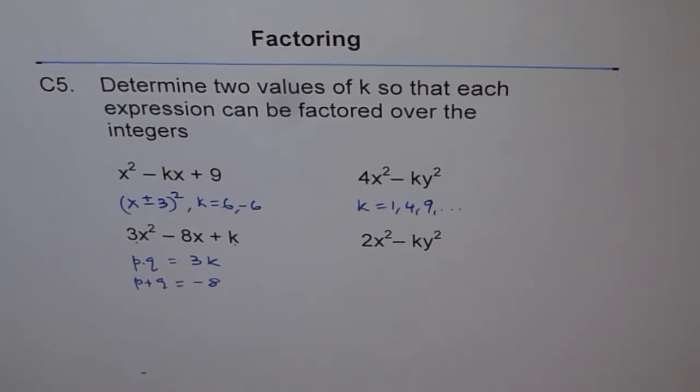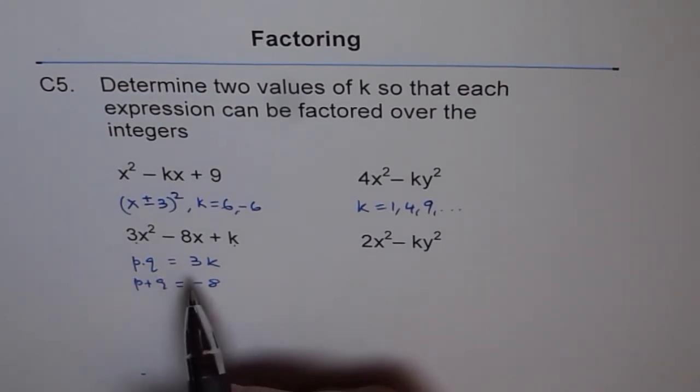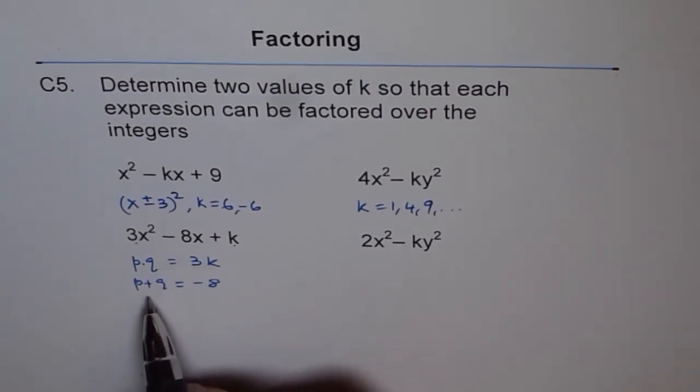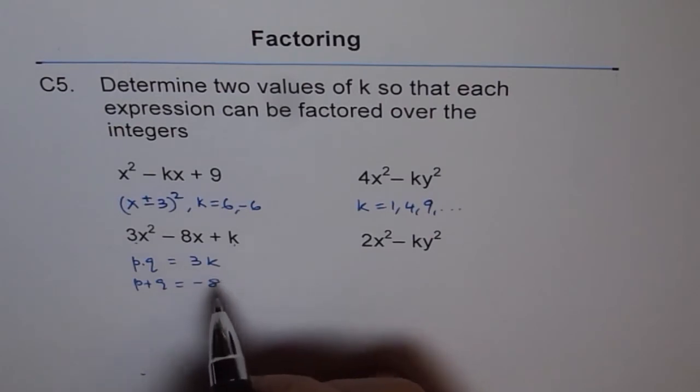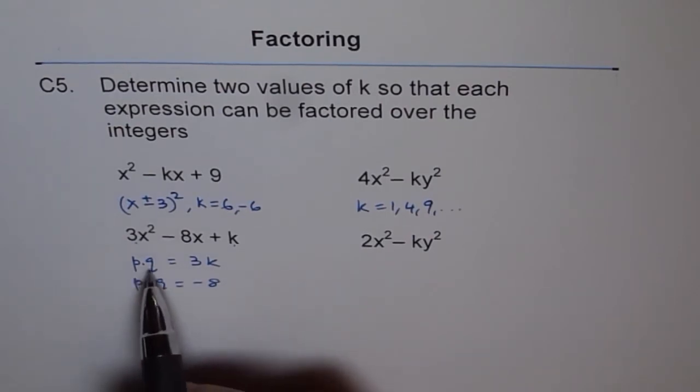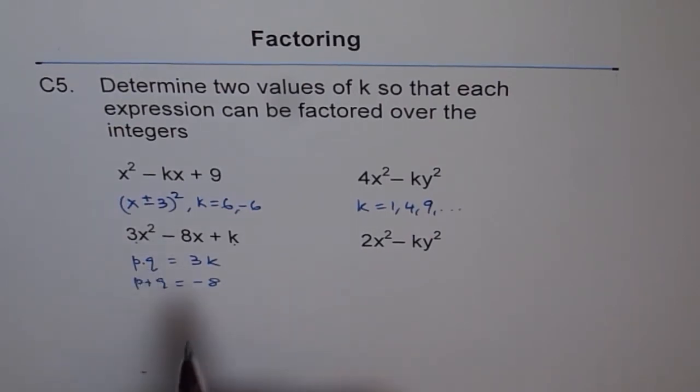So what could those numbers be? That is the issue. So if you want sum as minus 8 and product as 3 times something, that means it has to be a multiple of 3. So let us try different multiples of 3. For example, 12. If p and q is 12 when you multiply, then k should be 4, right? 3 times 4 is 12.